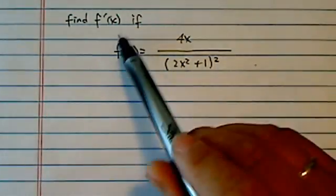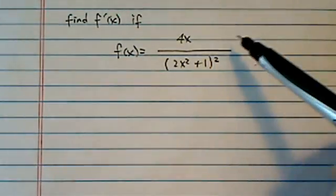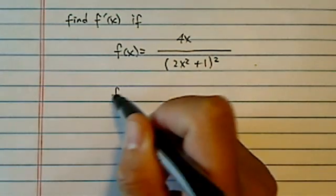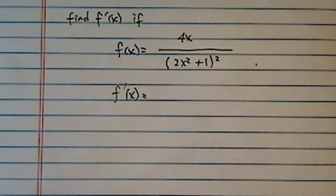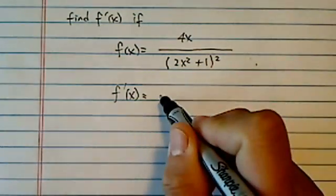That was off topic. What we have to do here is obviously a quotient. Quotient rule is not hard, but it's messy. The thing you have to get in your head before you start is keep it simple. Here's what we're going to do.